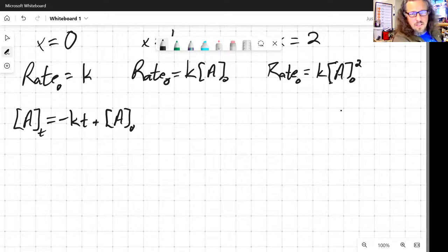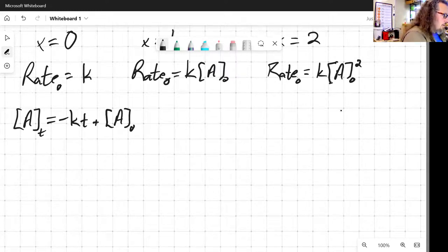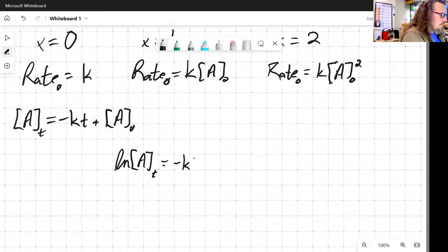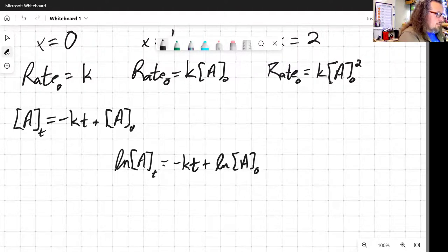I can integrate separately for all of these. If I do the first order integrated rate law, it turns out that that is natural log of [A] at time t is equal to -kt plus natural log of [A] at time zero.